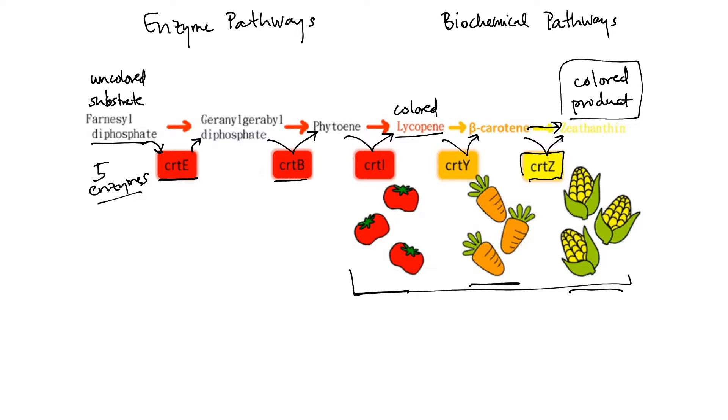But perhaps not all fruits and vegetables have all of the enzymes. For example, tomatoes might not have any activity of CRT-Y, and then here, lycopene would be the final product. But in carrots, we've got lots of CRT-Y activity, so we end up producing beta-carotene, but not any CRT-Z activity so that the carrots don't turn yellow.